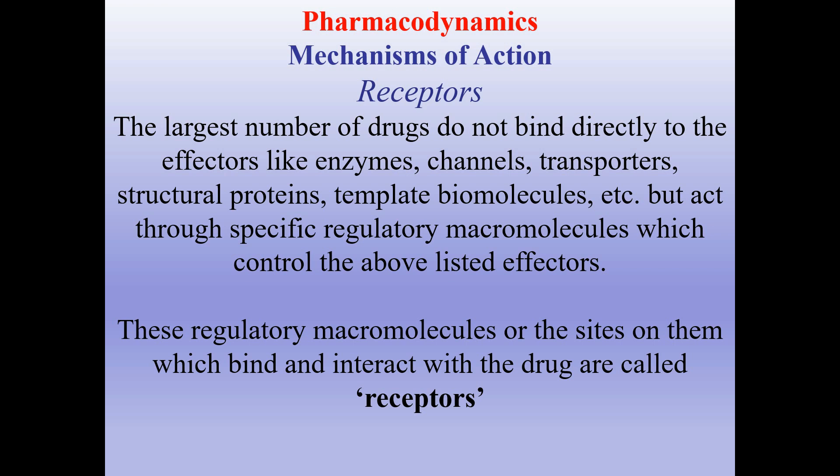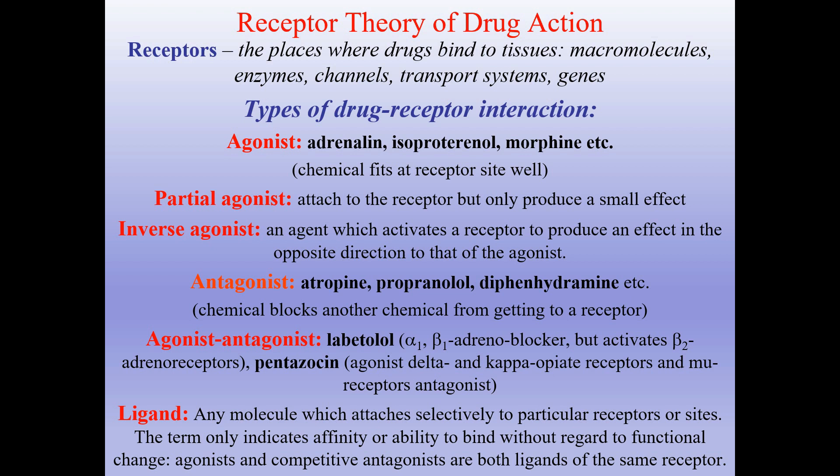Receptors: the largest number of drugs do not bind directly to effectors like enzymes, channels, transporters, or structural proteins, but act through specific regulatory macromolecules that control those effectors. These regulatory macromolecules, or the sites on them which bind and interact with the drug, are called receptors. To generalize: receptors are the places where drugs bind to tissues — macromolecules, enzymes, channels, transport systems, and genes.